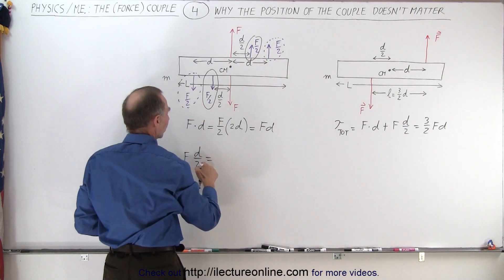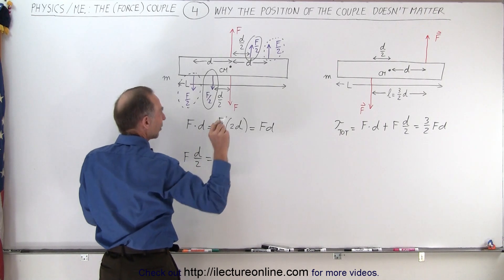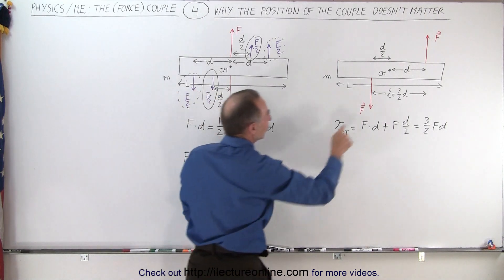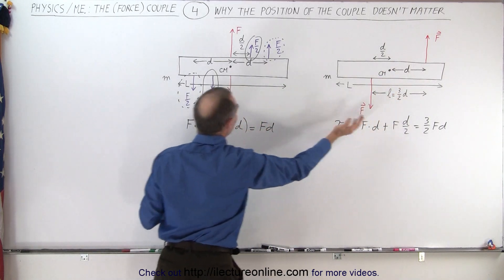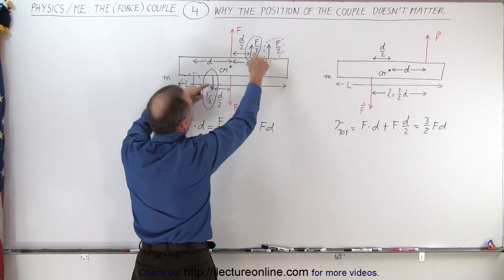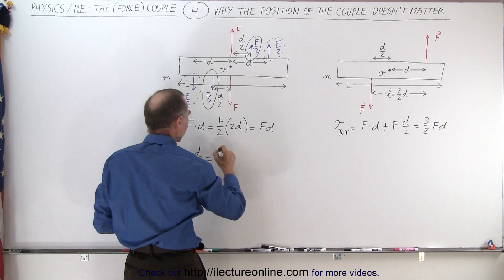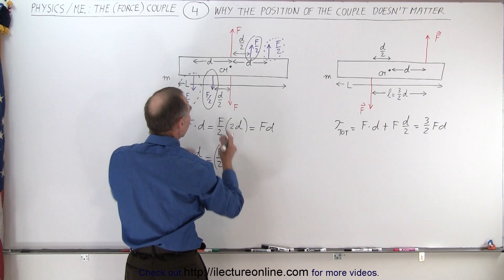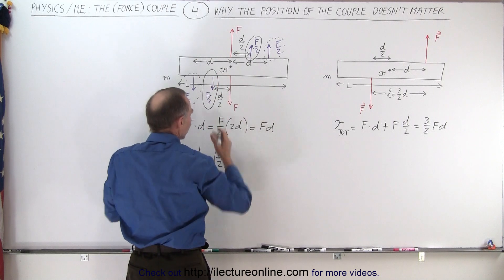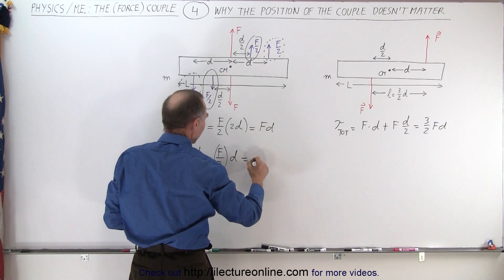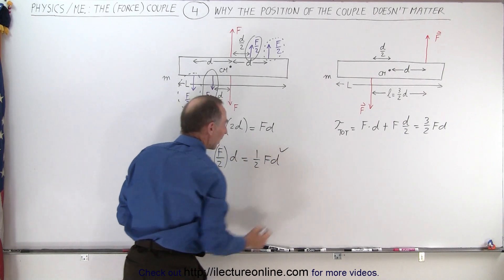To verify equivalency: the torque is equal to force F times the distance D over 2. That must equal the magnitude of one of the couple forces, which is F over 2, multiplied by the total distance between them — that's D over 2 plus D over 2, which is a total of D. So this gives one-half FD, and again this is equivalent. We can take these two forces, which form a couple, move them both to the center of mass with the associated couple equivalency, and see that we have the very same torque.